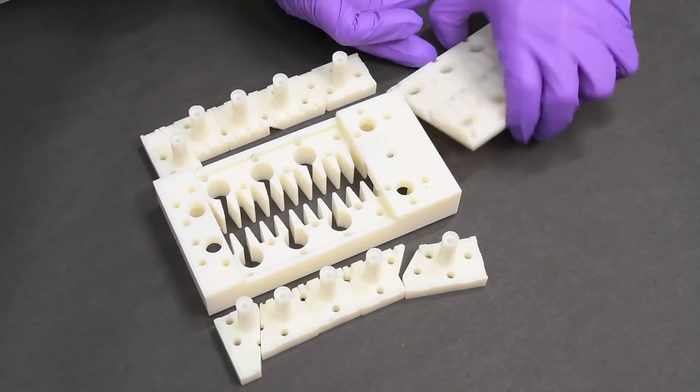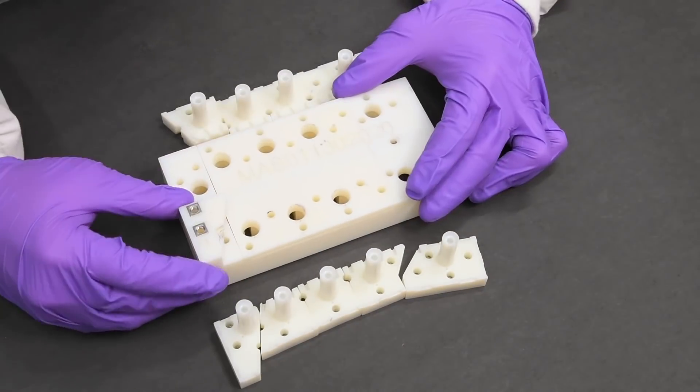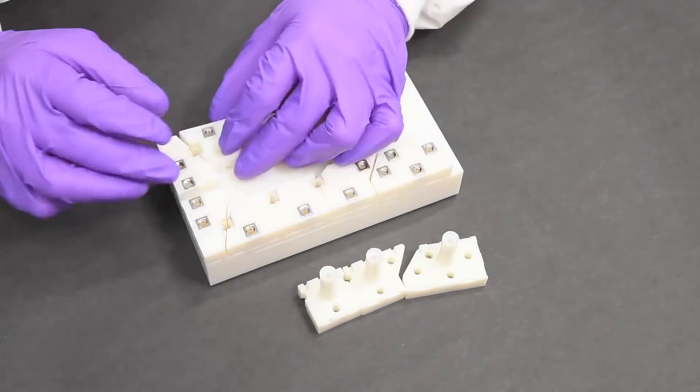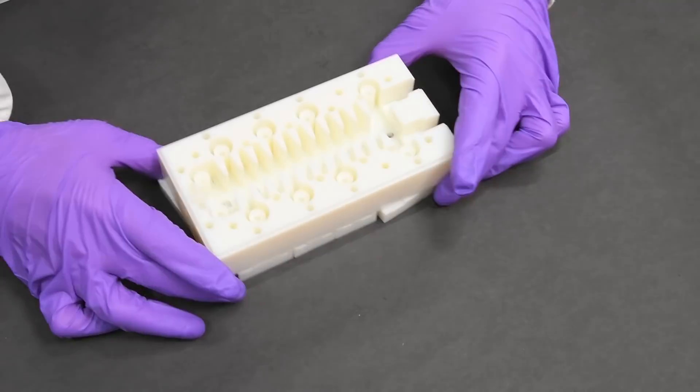The bottom mold assembly consists of individual pieces for each of the magnetic dome actuators that have to be inserted, as well as a larger bottom plate that can be removed to push out the mold when it's done.